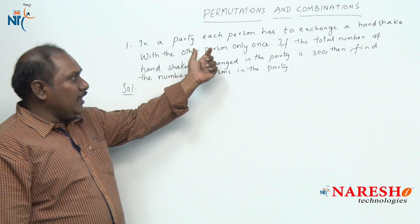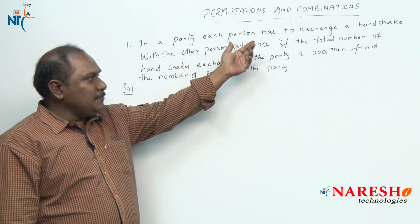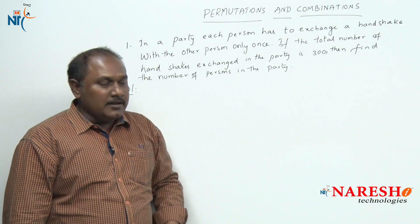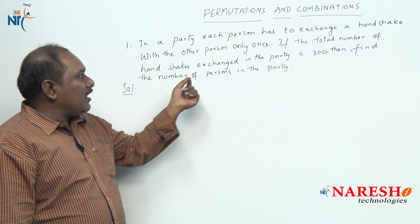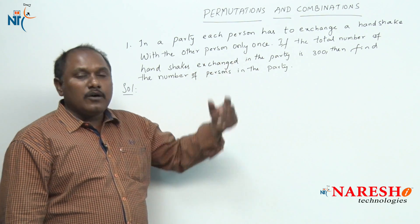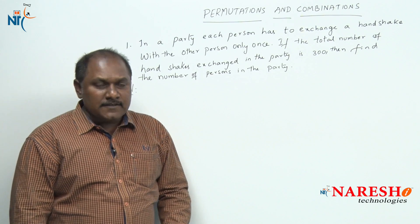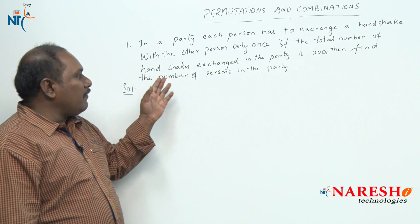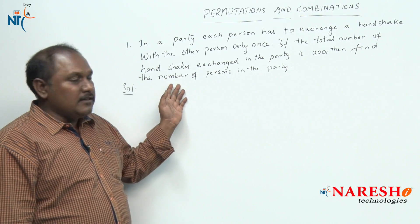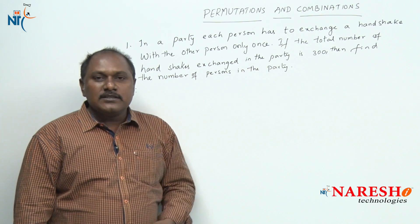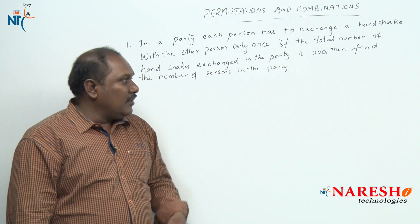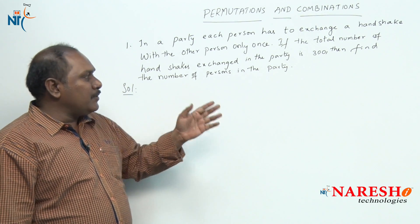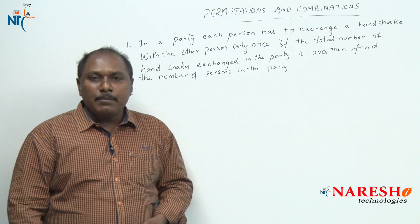In a party, each person has to exchange a handshake with the other person only once. If the total number of handshakes exchanged in the party is 300, then find the number of persons in the party.